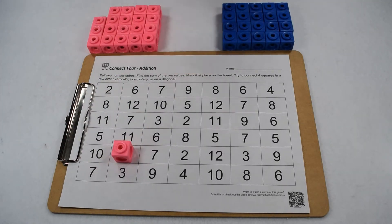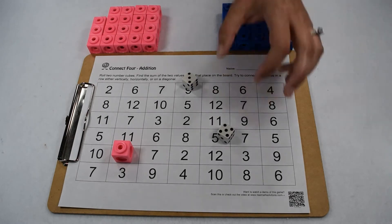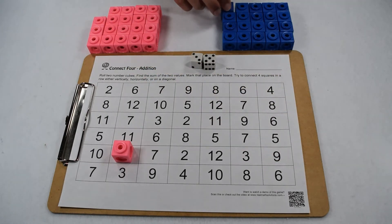Now it's our blue player's turn, player two. They're going to take the dice and roll them. They got a five and a three. Five plus three together is eight, so they're going to take their blue marker and mark off an eight.